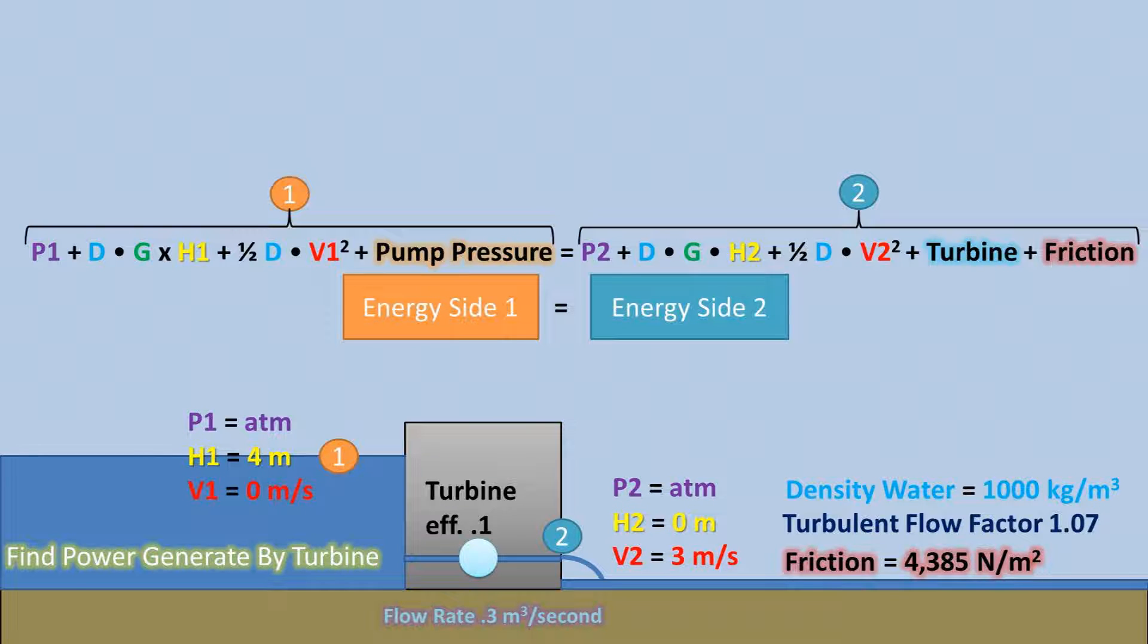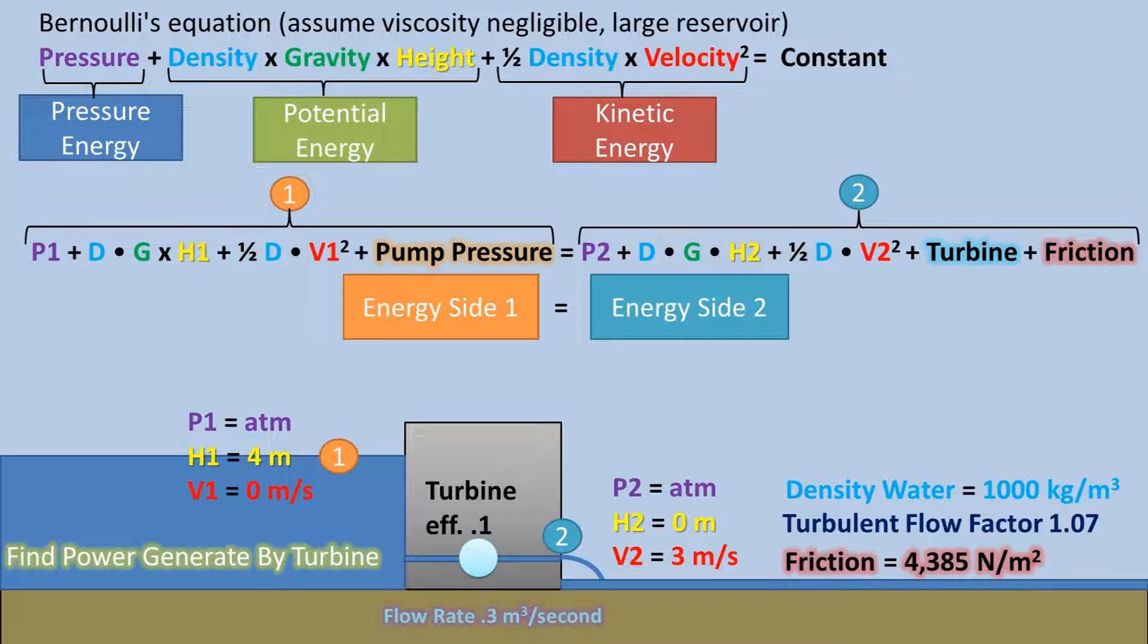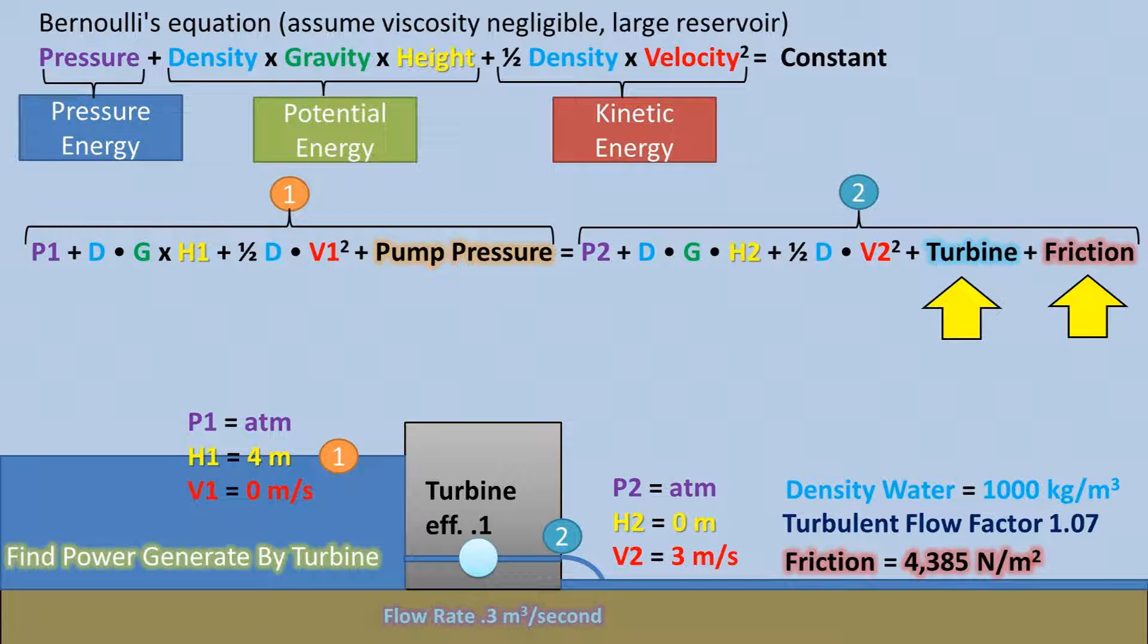Well, we need to use the expanded form of the Bernoulli equation, and assume that energy is conserved, or does not disappear, from point 1, which is the waterline of the reservoir, and point 2, which is the point where the water is leaving the dam. Recall that the Bernoulli equation is simply adding up the pressure energy plus the potential energy and the kinetic energy of a fluid at a given point. In the expanded form, we also add pump pressure to one side because it adds energy before reaching the second point. This won't be included in this problem, but is worth mentioning. On the second side, or point 2, we add a turbine value and a friction value because both of these values are taking away from the total energy at point 1 before it reaches point 2.